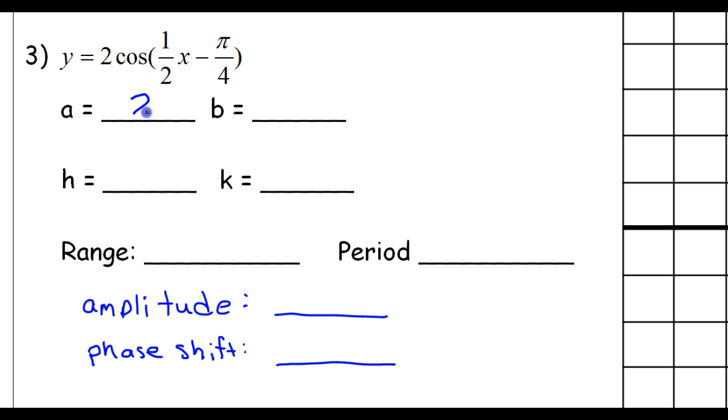The A value is 2, and in this case, that means that the amplitude is 2, but the A value can be negative. Amplitude is always positive.